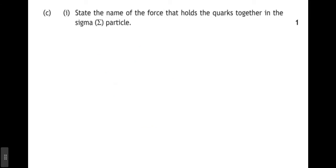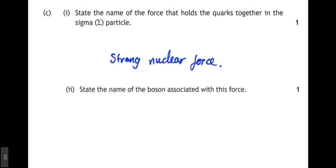Part C. One, state the name of the force that holds the quarks together in the sigma particle. Well, there are four fundamental forces of nature. There is the strong force, the weak force, the gravitational force, and the electromagnetic force. And the one that holds quarks together inside the nucleus of an atom is the strong nuclear force. The name of the boson associated with this force is the gluon.